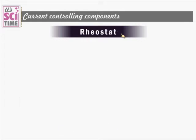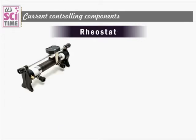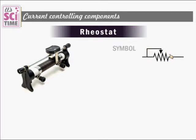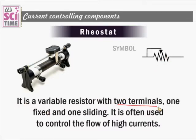The next current controlling component is the rheostat. A rheostat is also a variable resistor but a larger one capable of handling high current. Its symbol indicates that resistance is changed using one fixed terminal and one sliding terminal. It is often used to control the flow of high current. Watch a video to understand the action of the rheostat.